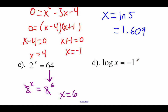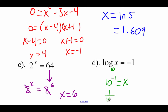Next one: we've got log of x equals negative 1. I'm going to rewrite this one as an exponential equation. The base isn't written here, but remember it's automatically a base 10 logarithm if it's not written. So this would say 10 to the negative first power equals x. Rewriting to get rid of the negative exponent: 1 over 10 to the first power equals x, and since 10 to the first is just 10, this is 1 tenth.